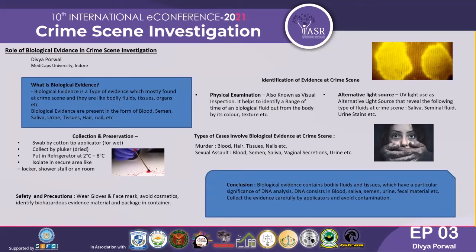The second method is alternative light source. In this method, UV light is used as an alternative light source to reveal certain types of fluids at the crime scene, such as seminal fluid and urine. If any type of semen evidence is present at the crime scene, the alternative light source can confirm whether the sample is originally semen or something else. If semen is present, it shows a particular fluorescence under UV light, confirming that the evidence is genuine.